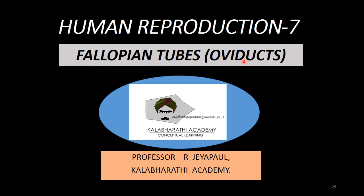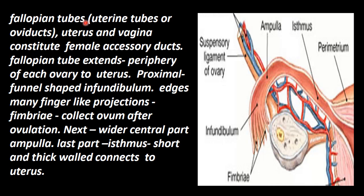The fallopian tube, also called the oviduct, is a tubular structure. The uterus is also a tubular structure. In these tubular structures, particular functions are carried out. The fallopian tube connects from the periphery of the ovary to the uterus and vagina. It is called the female accessory duct.